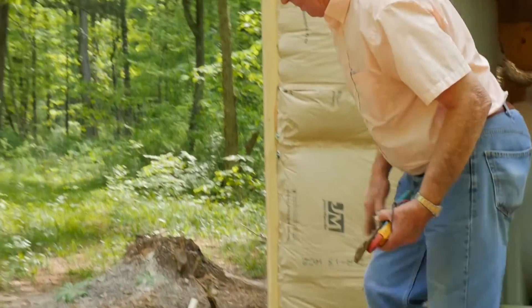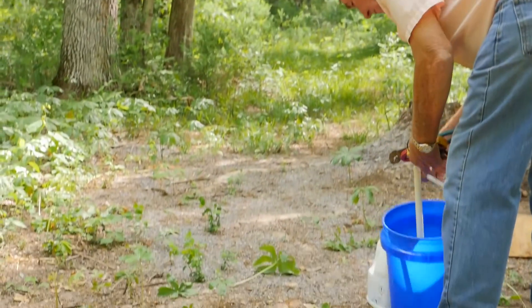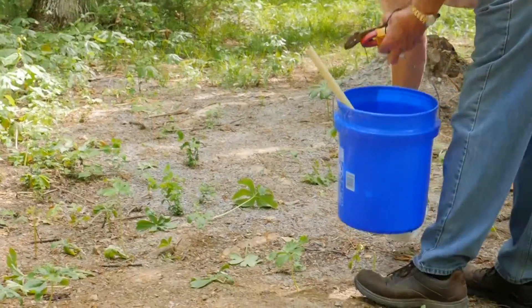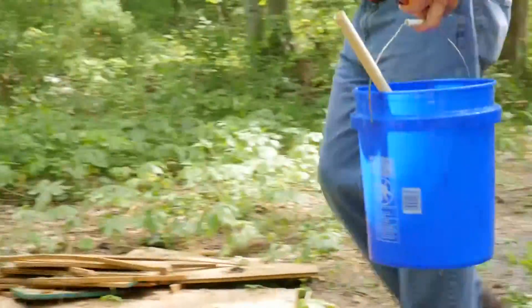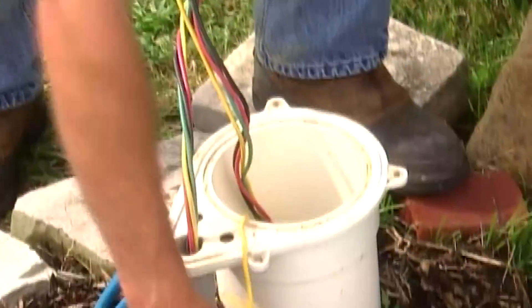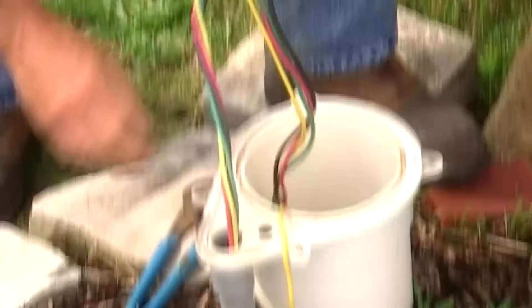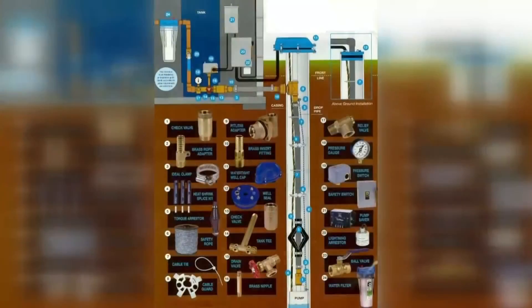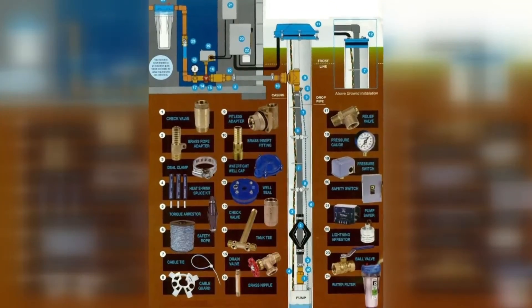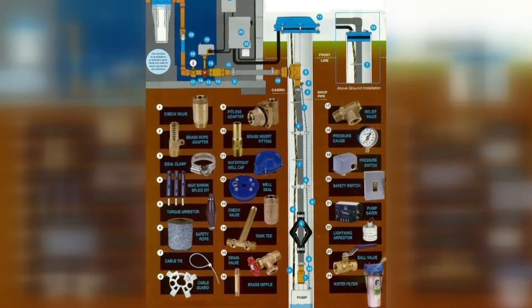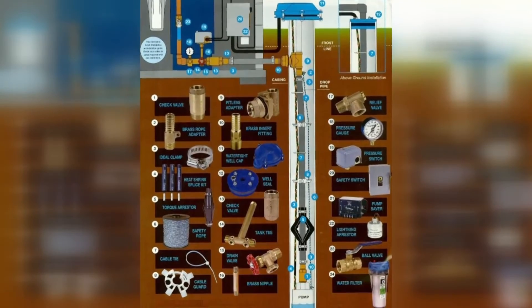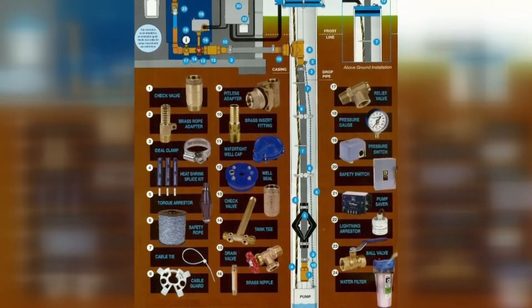A qualified water well system professional is best suited to investigate the possible causes of reoccurring microorganisms in the well. While components of a well system above the ground surface can be inspected visually, other well components are in the subsurface and require the kind of special diagnostic techniques that water well system professionals use. If the presence of bacteria is recurring, consult with a qualified water well system contractor who can advise you how to proceed.